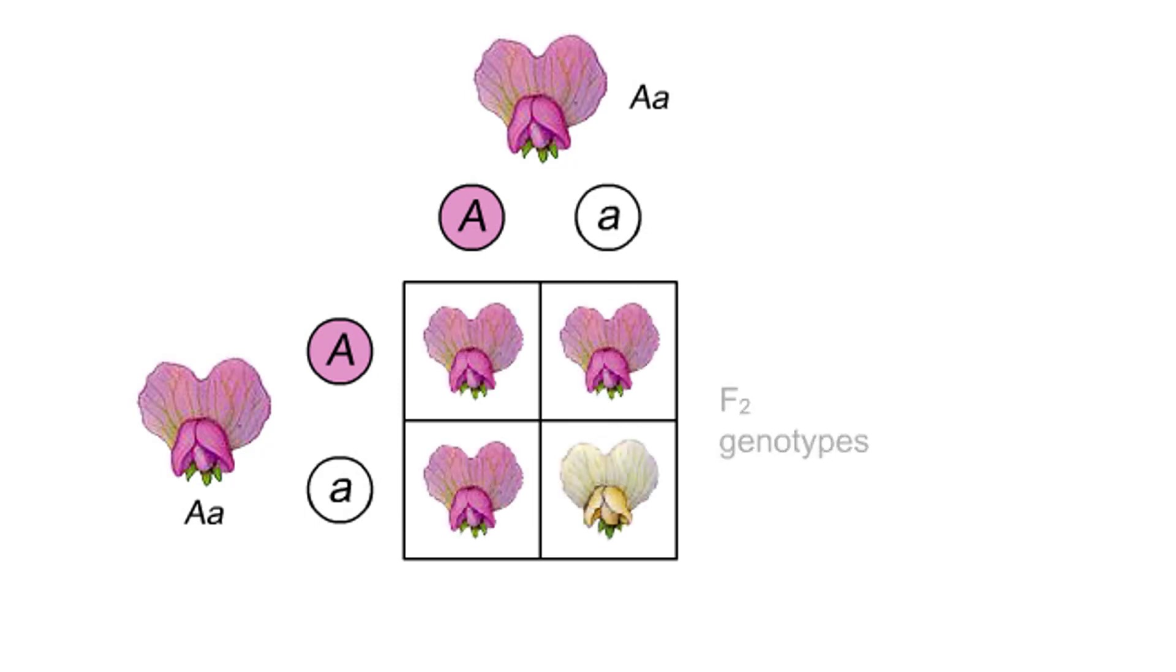There are two phenotypes, and the ratio of dominant to recessive phenotypes is 3 to 1.